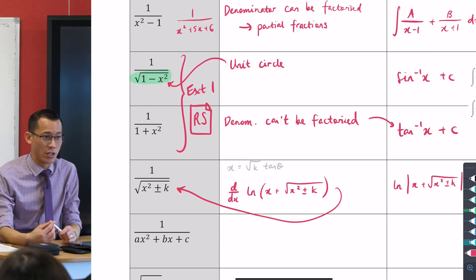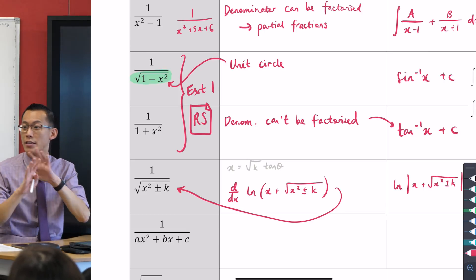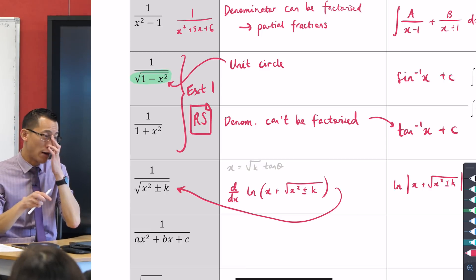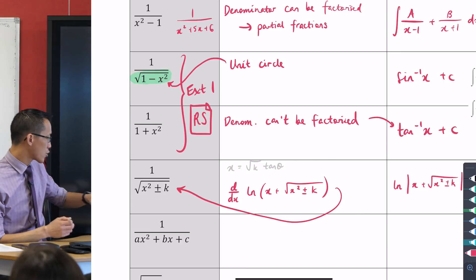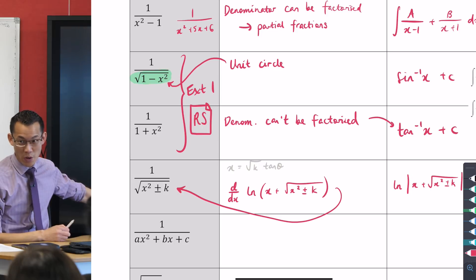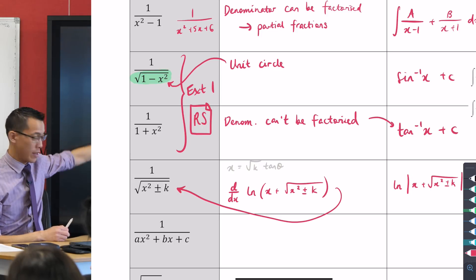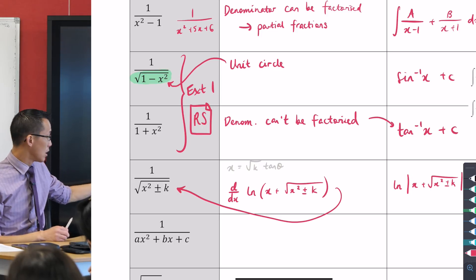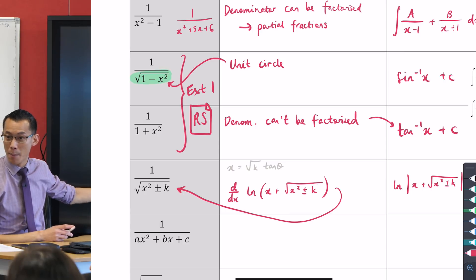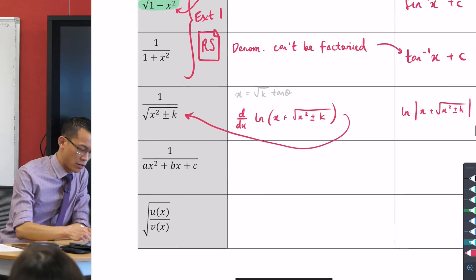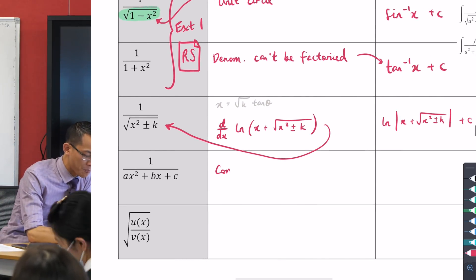The thing that stands out to me is, none of them have linear terms in the denominator. Can you see that? There's never an x term, there's an x squared, there's a constant term, there's never an x. So therefore, as we've so often done in maths, we want to try and turn a problem that's weird looking into one that we're more familiar with.